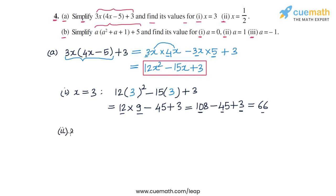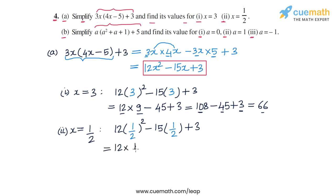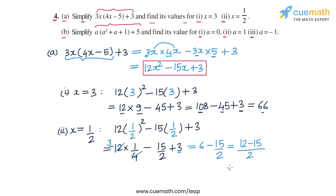Now we calculate the value for x equal to half. Substituting into 12x squared minus 15x plus 3, we get 12 times (1/2) squared minus 15 times (1/2) plus 3. That is 12 into 1/4 minus 15/2 plus 3, which equals 3 minus 15/2 plus 3, or 6 minus 15/2, written as 12/2 minus 15/2, giving minus 3/2. So the value for x equal to half is minus 3 by 2.